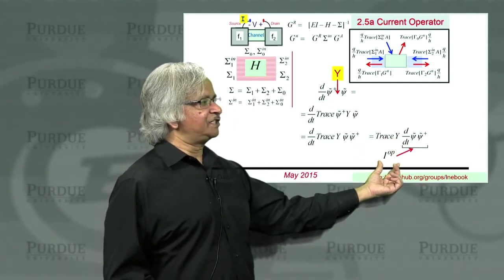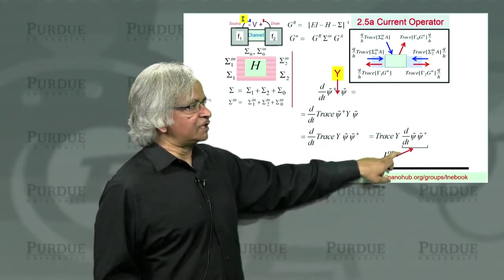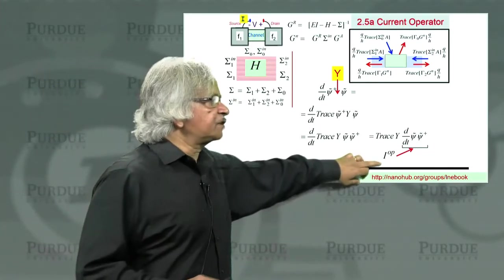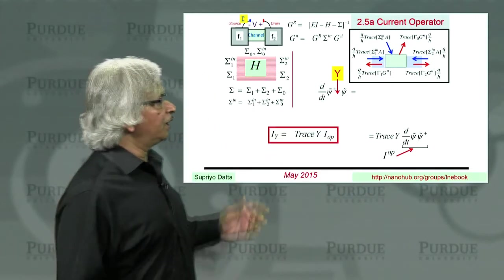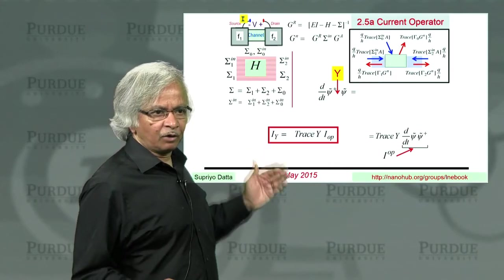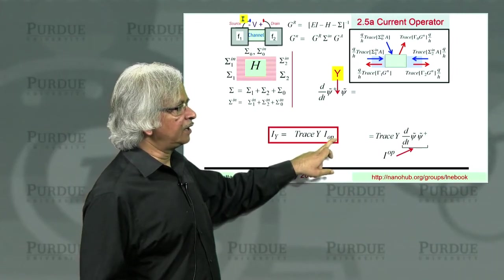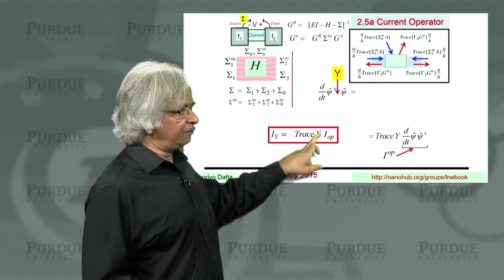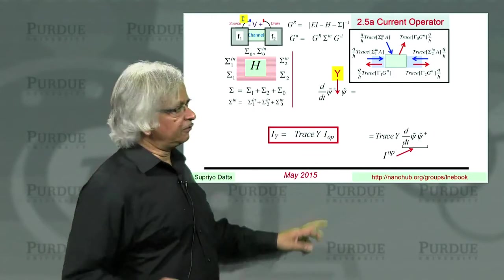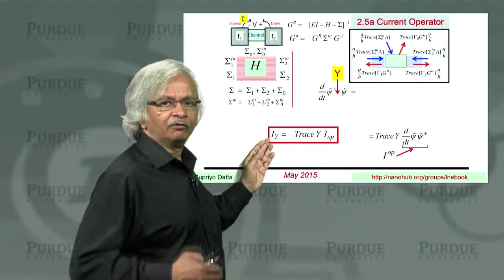And the idea would be, we do this once and for all. It doesn't matter what the quantity Y is. But once you have an expression for I_op, you could go ahead and find the current of that quantity Y. So you want to know the spin current, then Y is the spin. So what you do is take the current operator, multiply it by the appropriate matrix that represents spin, and trace it. If you wanted to know the flow of momentum, well, find the right matrix, put it there, multiply it, and you'd get the flow of momentum, for example.